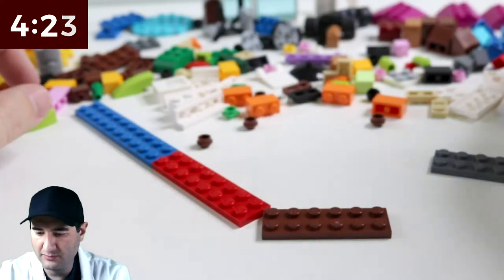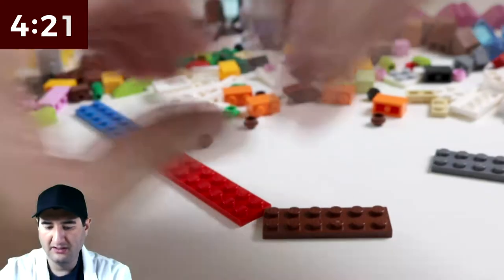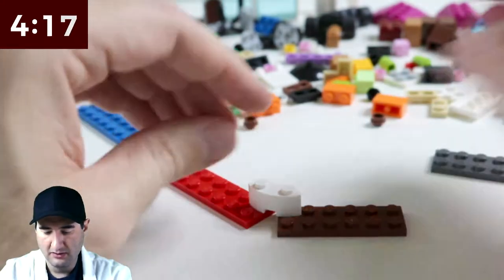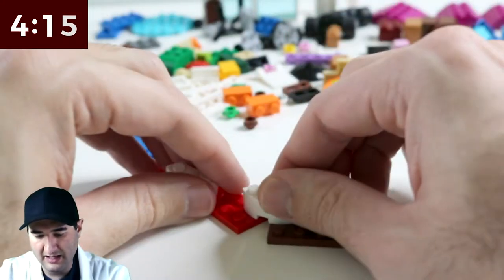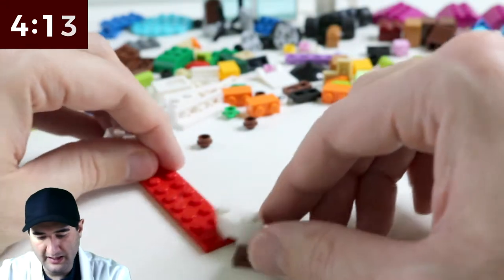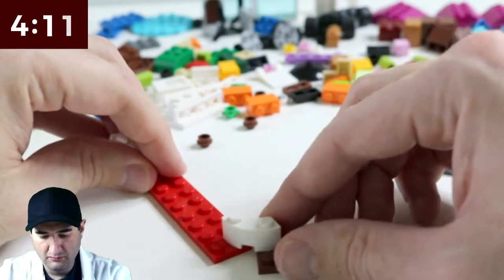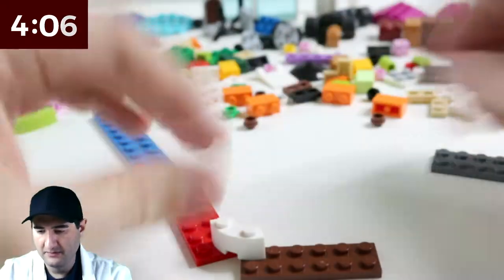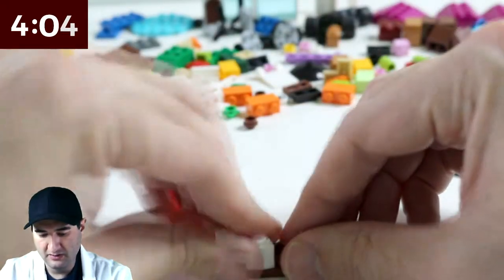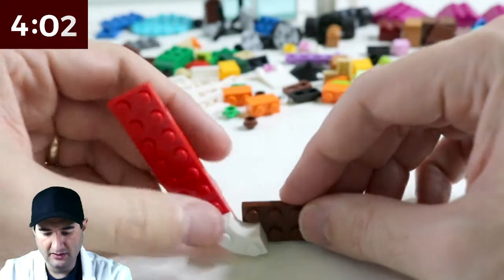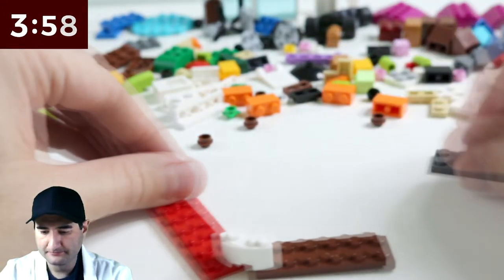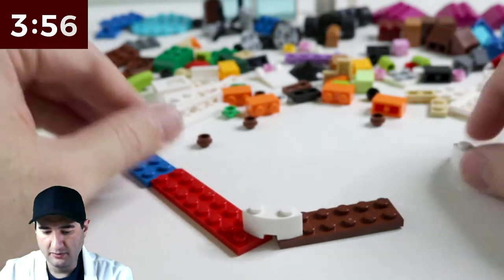Now, one of the things that we did before to make a turn was to actually have a turn built in. So something like that, where it allows us to put the angle that we want into the build. Okay. So that's not bad. So maybe if we do something like that even. Yeah, that works. So that works.